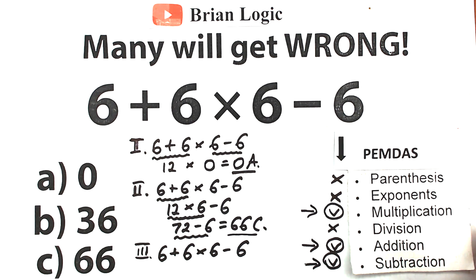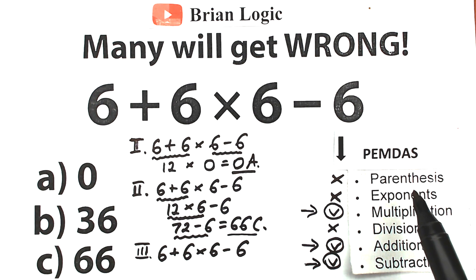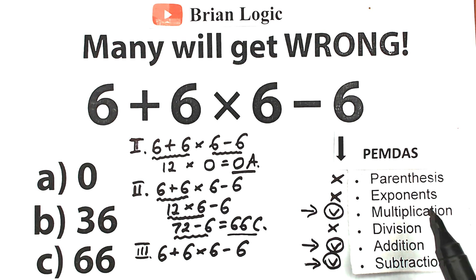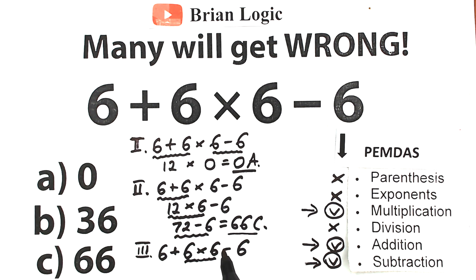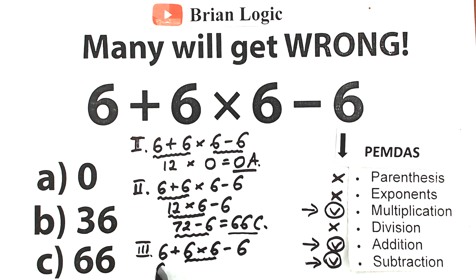Right now we should identify which operation has the higher priority. Parentheses — highest priority — but we don't have parentheses. Exponents — higher priority than multiplication — but we don't have exponents. So the first step is to multiply. The multiplication is right here in the middle, so we start with 6 times 6 equal to 36, giving us 6 plus 36 minus 6.